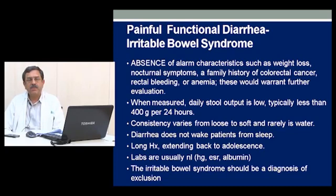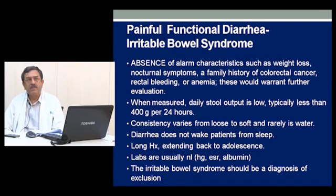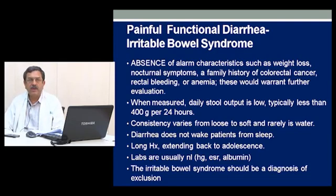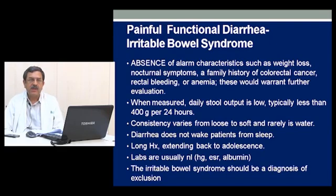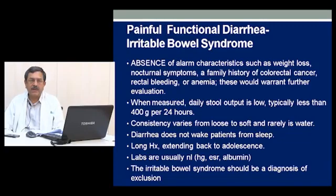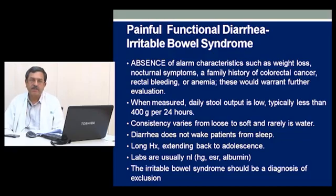Irritable bowel syndrome should be a diagnosis of exclusion rather than the first diagnosis. For treatment of irritable bowel syndrome, the first and foremost step is patient counselling. If diarrhea is present, stool binders such as ispaghula husk are commonly used. Patients should also be addressed on the psychological front, as many have anxiety and anxiety neurosis, and tackling this simultaneously will benefit treatment greatly. For patients with a lot of tenesmus or abdominal discomfort resulting in loose stools, antispasmodics like mebeverine derivatives are of great benefit.